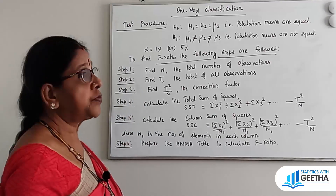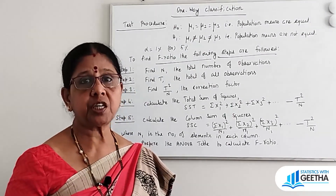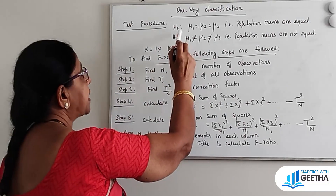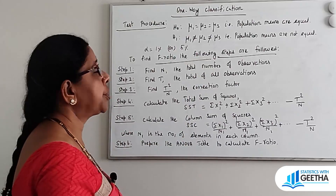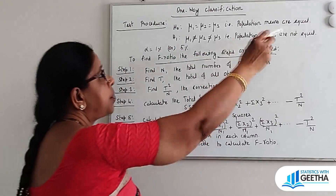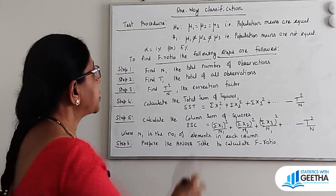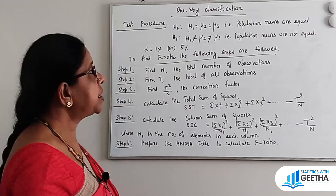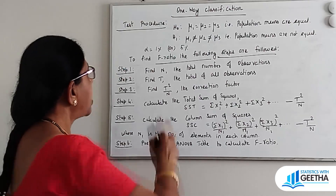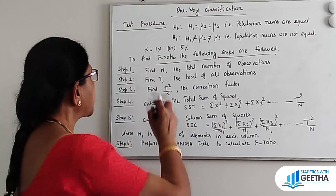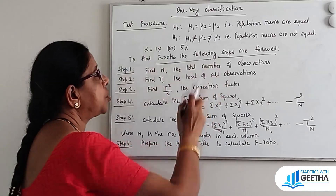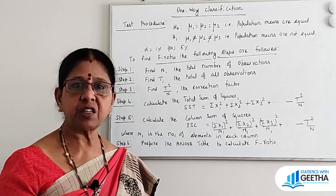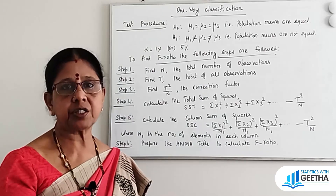In One-Way Classification, the test procedure is as follows. H₀: μ₁ = μ₂ = μ₃, that is the population means are equal. H₁: μ₁ ≠ μ₂ ≠ μ₃, that is the population means are not equal. Alpha may be 1% or 5%. To find the F ratio, we follow 6 steps.